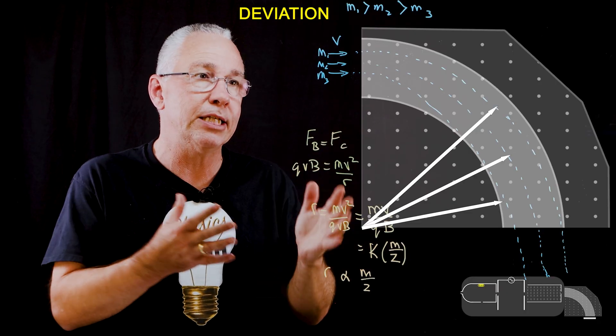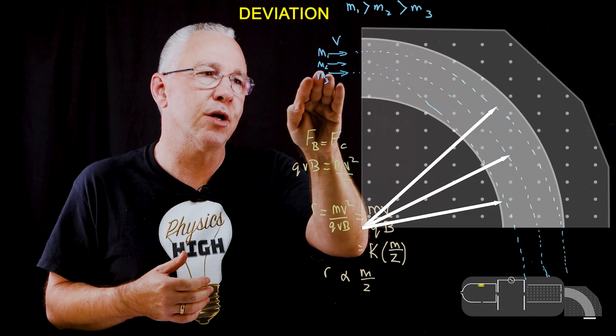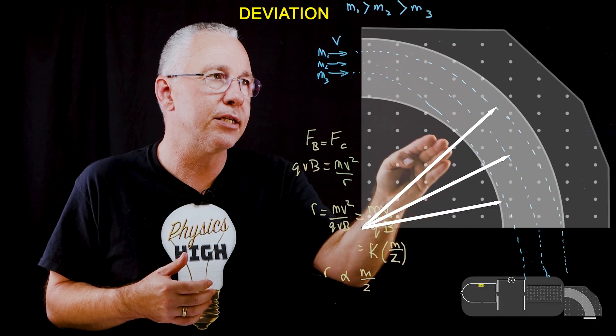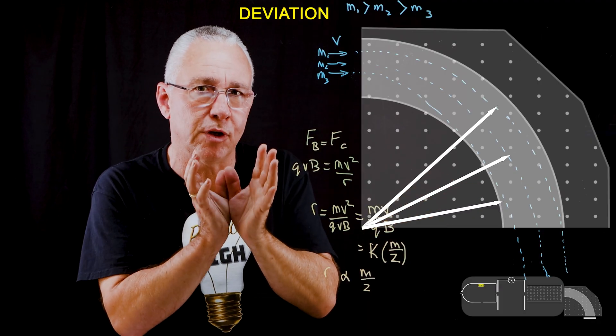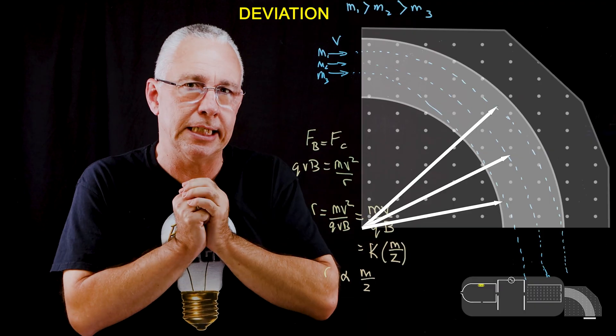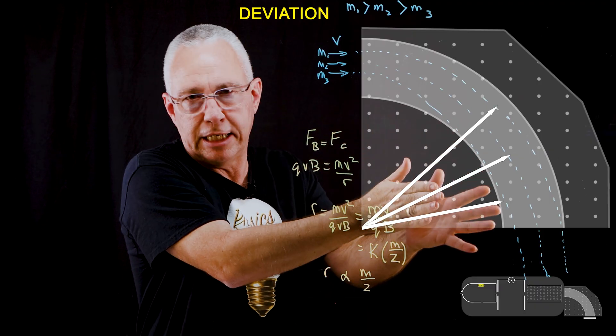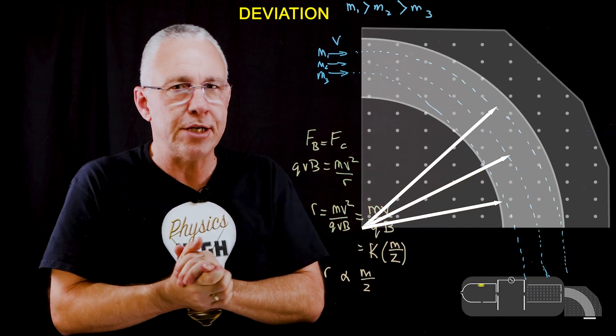Similarly speaking, if my velocity is too low, then as a result my particle might actually hit the sides over here. That's why it's important to select the correct velocity in the velocity selector to match the magnetic field strength in the deviation section.